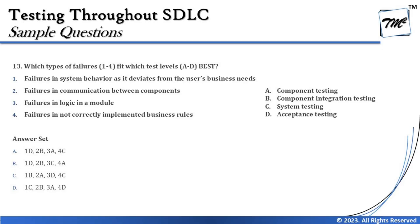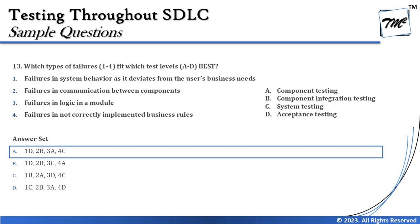We are left with failure number 4: 'failure in not correctly implemented business rules.' Business rules are more related to use cases, which pretty much goes to system testing. You can always start with whatever you are most confident about — it's not necessary to follow the same order. If you're more confident with component integration, start there and the others will align. The right answer is: 1→D (acceptance testing), 2→B (component integration testing), 3→A (component testing), 4→C (system testing).